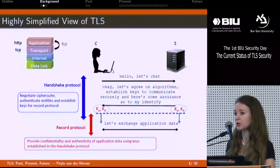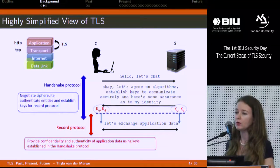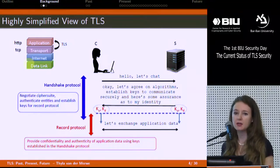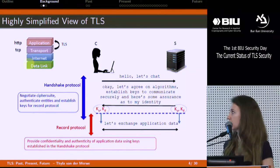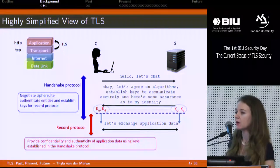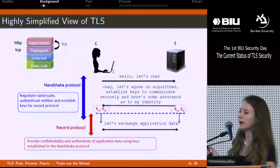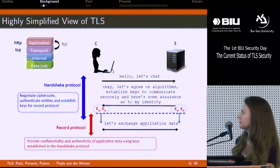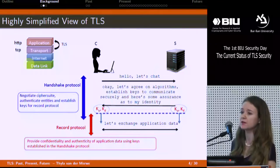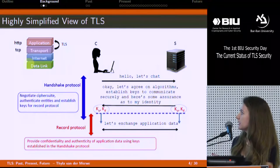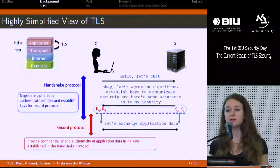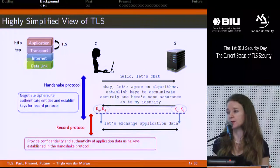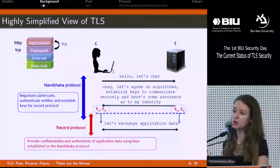TLS is largely made up of two sub-protocols: the handshake protocol and the record protocol. The handshake protocol uses public key cryptography to authenticate the communicating entities and to help establish keys that will be used to protect application data as part of the record protocol. The record protocol then uses these keys to provide confidentiality and authenticity of application data. In TLS 1.2 and below, these protocols overlap slightly — the first record protected by the record protocol is the final message of the handshake protocol, the finished message. So in essence, the handshake protocol is really running over the record protocol.